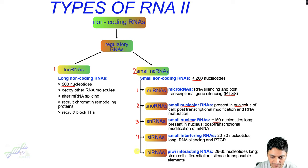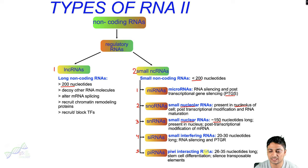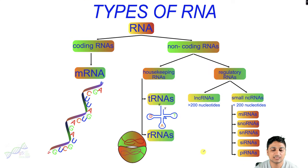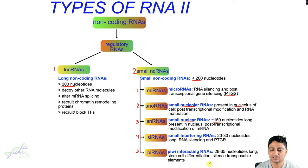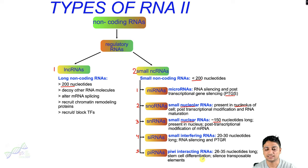The fifth type of small non-coding RNAs are piwi-interacting RNAs, in short known as piRNAs. These RNAs are around 26 to 35 nucleotides long and they are responsible for stem cell differentiation, and their main role is the silencing of transposable elements.